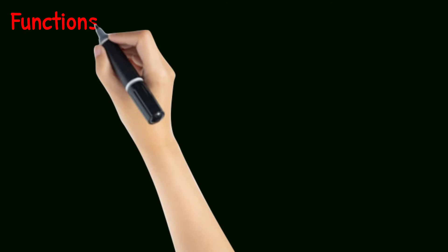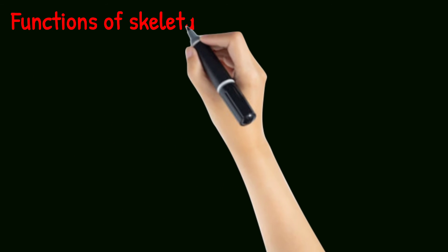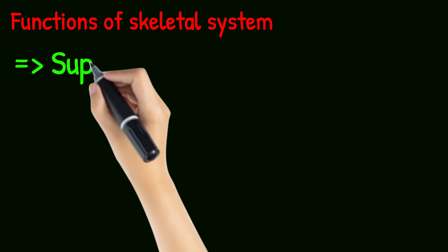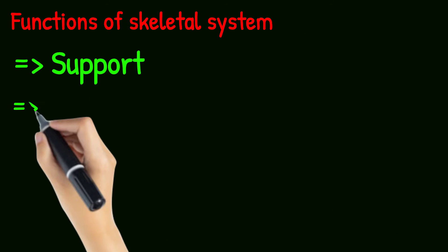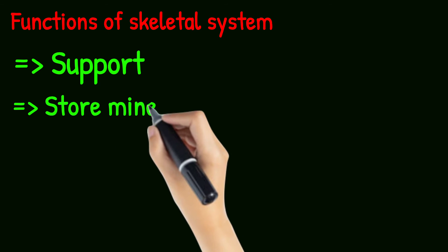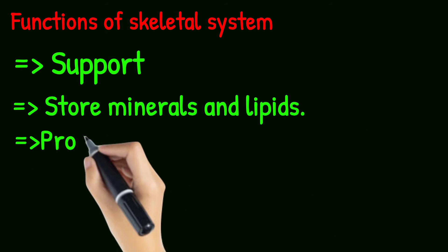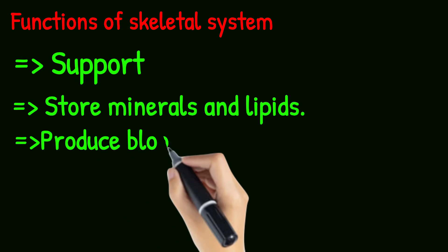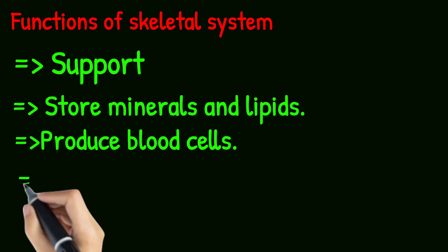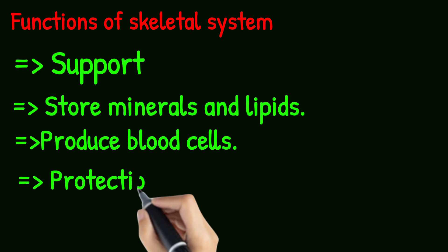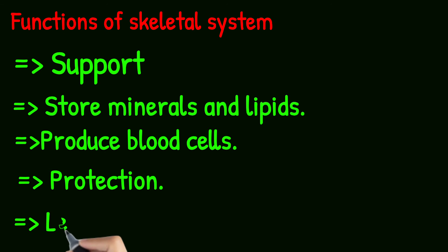Now we come to the function of the skeletal system. The first function of the skeletal system is support, the second one is store minerals and lipids, the third one is produce blood cells, the fourth one is protection, and the fifth one is leverage.